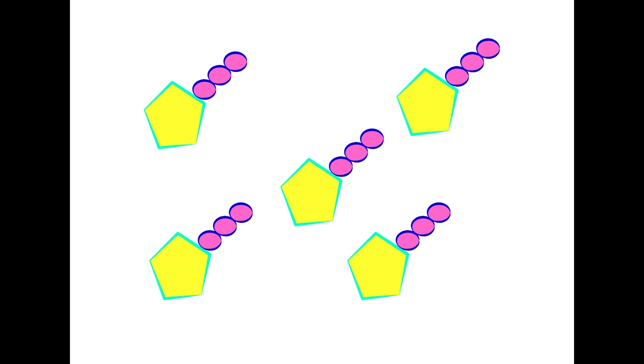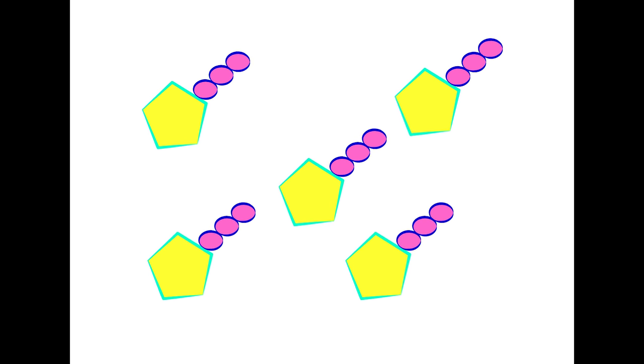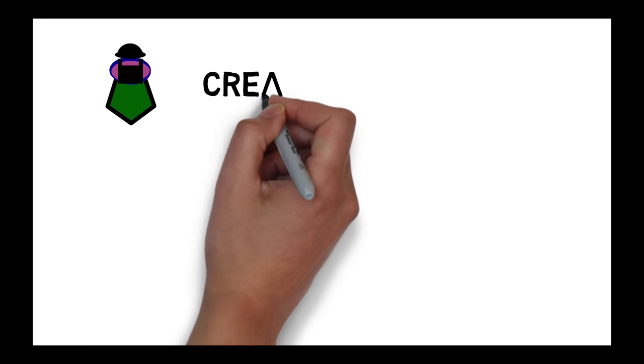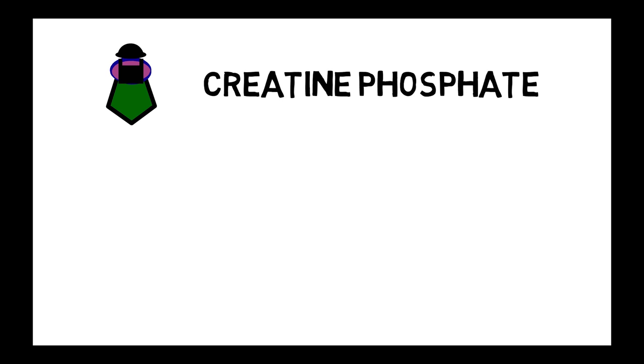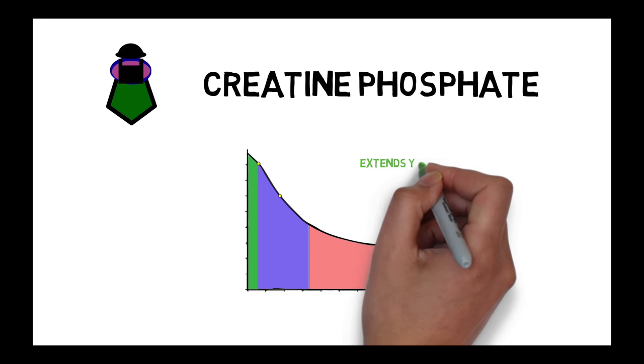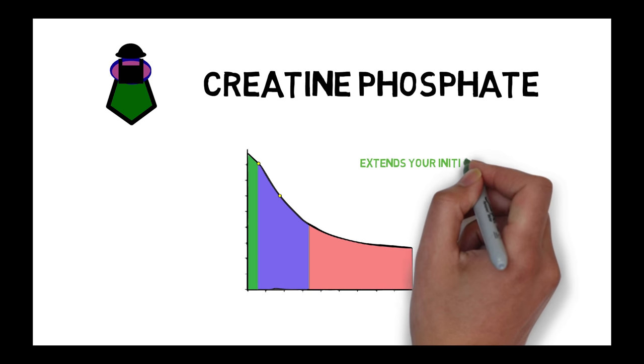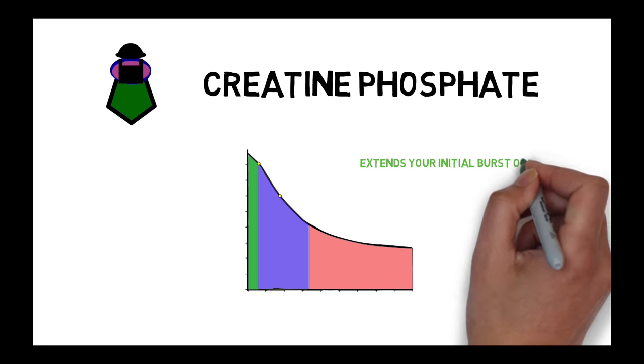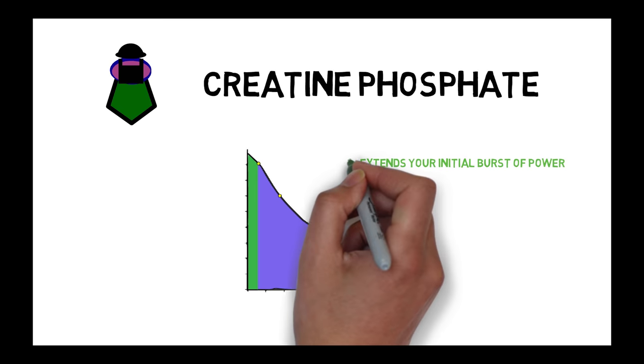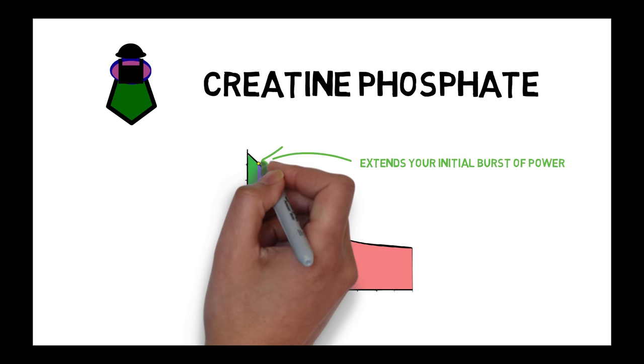This is why your 4 rep max is still around 90% of your 1 rep max. This creatine phosphate has managed to take an initial supply of ATP and recycle it to last nearly 10 seconds. As an interesting aside, studies have found that baseline creatine kinase levels are higher in African Americans than in whites. So if you're African American, you can enjoy an explosive advantage there.